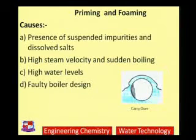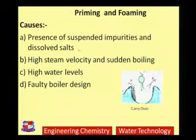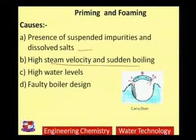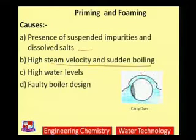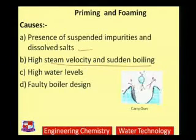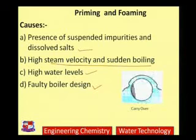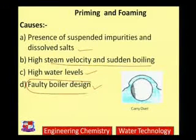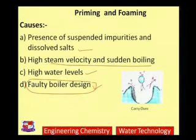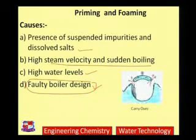The causes of priming include: presence of hard water, presence of suspended impurities and dissolved salts, high steam velocity, and sudden boiling. If sudden boiling occurs in the boiler, or if the rate of steam formation is increased rapidly, priming can happen. If the water level is not adjusted properly and is kept very high, it may also lead to priming. Faulty boiler design or engineering mistakes can also cause priming. Here you can see wet steam formation happening in the boiler.